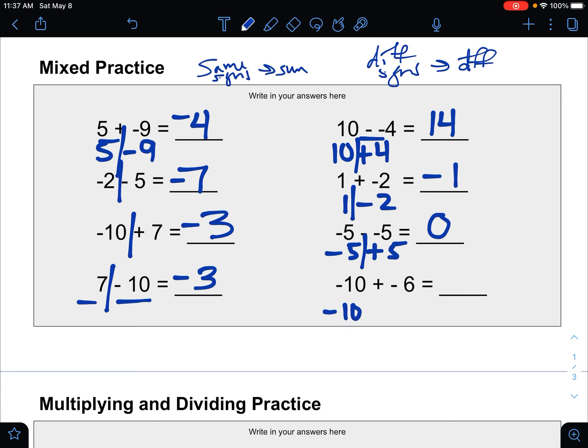And for the last one, it's negative 10, and plus a negative 6 is just minus 6. So this is the same signs, find the sum, put them together. We get 16, but they're both negative, so it's negative 16.